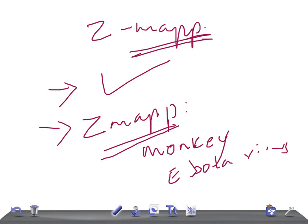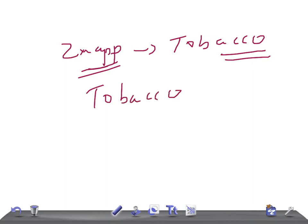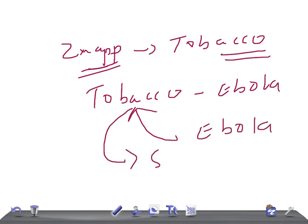ZMapp is derived from a tobacco plant that is grown in Arizona. The drug is made by the US. What they did was inject the tobacco plant with Ebola virus. When the plant started producing antibodies against the Ebola virus, they extracted that serum from the tobacco plant which had produced antibodies against Ebola virus.